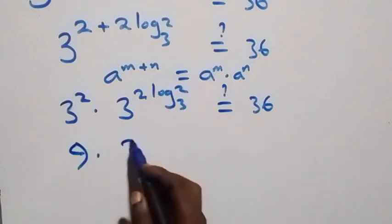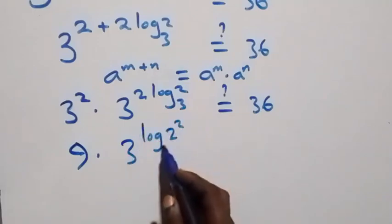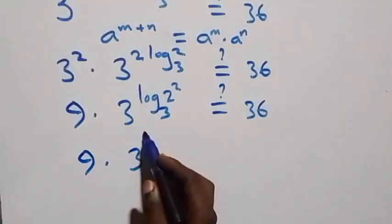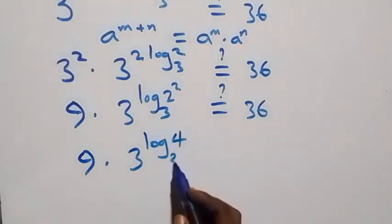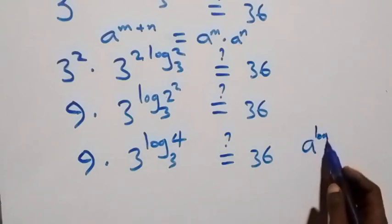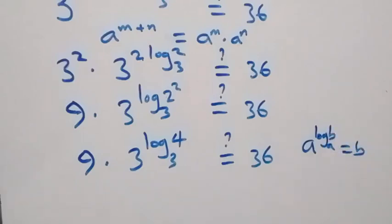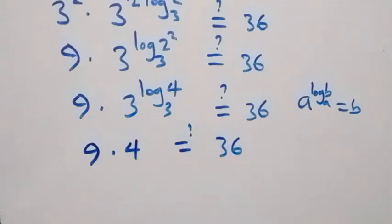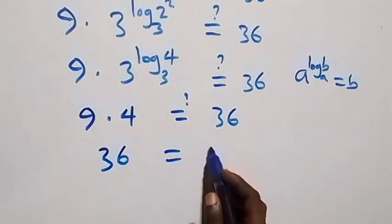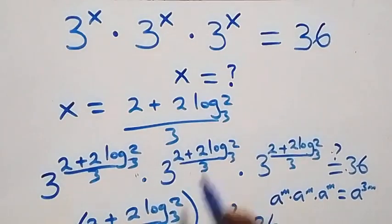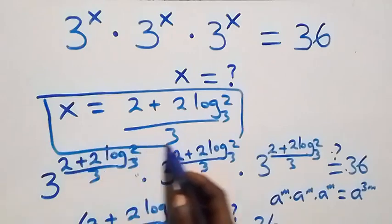This becomes 3 squared times 3 raised to power log base 3 of 2 squared, which equals 9 times 4, which equals 36. We used the identity a raised to power log base a of b equals b. So 9 times 4 equals 36, which matches the right-hand side. Left-hand side equals right-hand side, confirming that x equals (2 + 2 log₃2) / 3 satisfies the given problem.